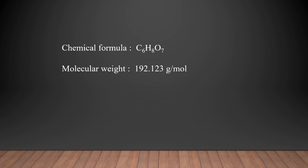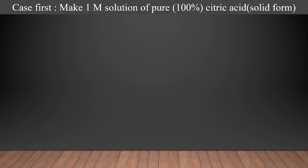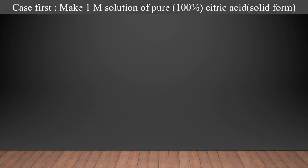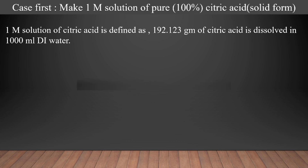The molecular weight of citric acid is 192.123 gram per mole. Let's take Case 1: if you want to make a one molar solution of pure citric acid. A one molar solution of citric acid is defined as 192.123 grams of citric acid dissolved in 1000 ml of distilled water.